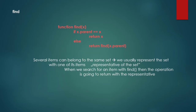The find operation gets an item X, and if the parent is equal to itself — meaning X's parent equals X — then we return X. Otherwise we return find(X.parent), calling this find method recursively on the parent. Several items can belong to the same set, and we usually represent the set with one of its items — the representative.